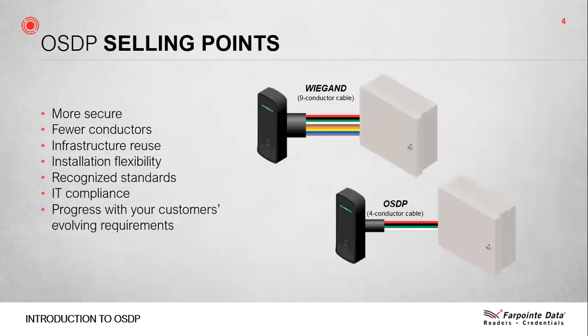OSDP unique selling points. Users of physical access control systems have a strong desire for convenience, but equally they have a strong expectation of security. First and foremost, OSDP is more secure than Wiegand — the key here is the option of an encrypted channel. OSDP can also save money, requiring less wiring. Who doesn't want to save money? Utilizing OSDP, you can often utilize existing wiring for retrofits. Technology and infrastructure reuse are indeed words we're hearing more and more often today.